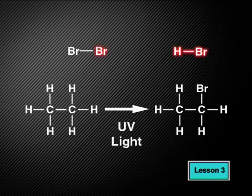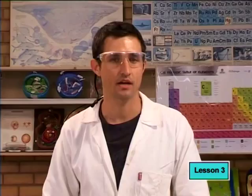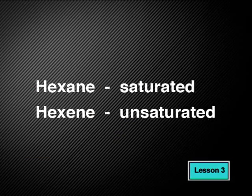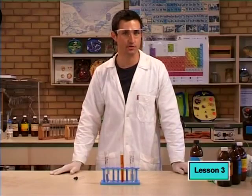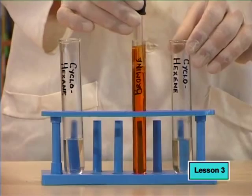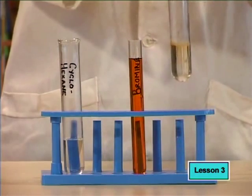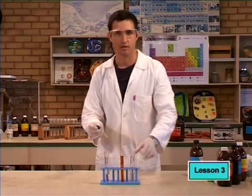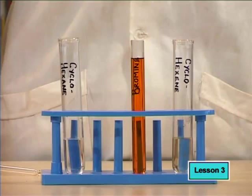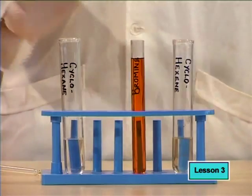Remember, this is the same bromine you saw reacting with ethane earlier. If we add a few drops of bromine dissolved in carbon tetrachloride to the cyclohexene, we expect to see that the red color of the bromine disappears very quickly. This shows us that the compound is unsaturated. Since we know that this is cyclohexene, this should be the case. And now for the cyclohexane, which is saturated.